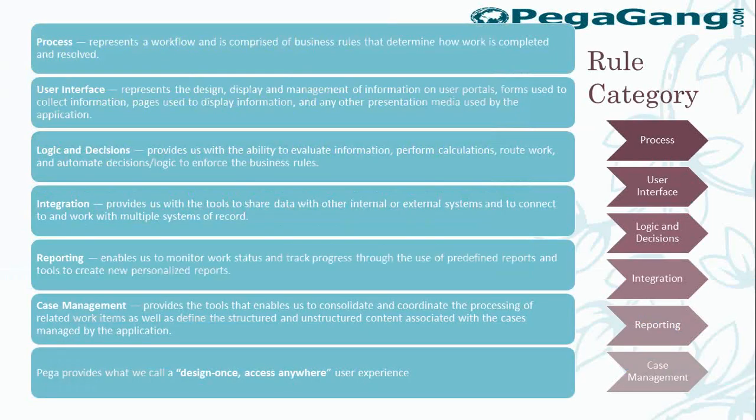To support case handling, Pega provides different rule categories. The process consists of workflow, user interface for the look and feel, logic and decisions like validation and evaluation, integrations to connect with external and internal systems, and rich reporting features. Pega has the motto: design once and access anywhere — you build an application once and it runs on mobile, cloud, laptop, and desktop.